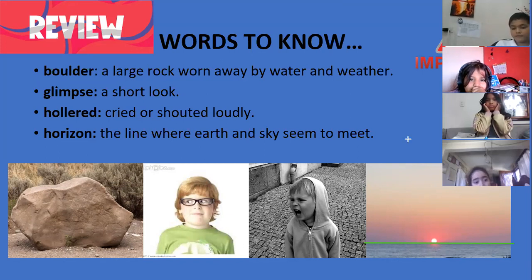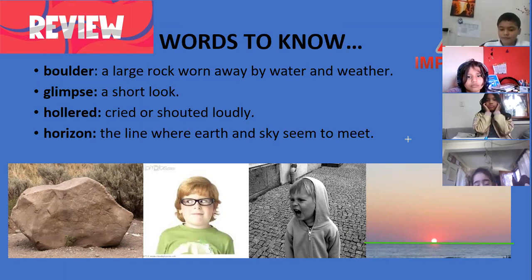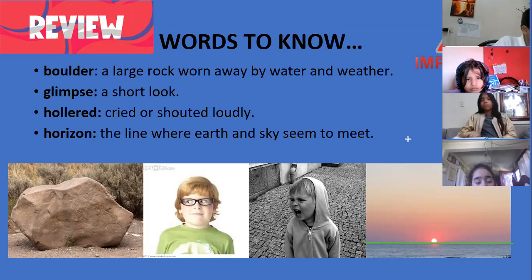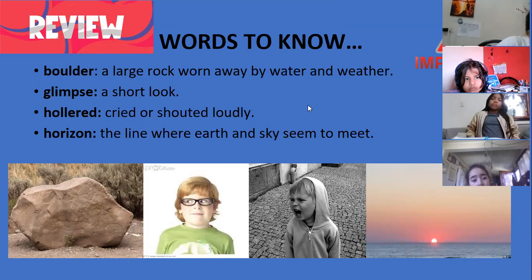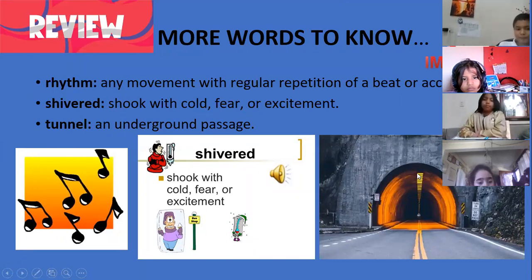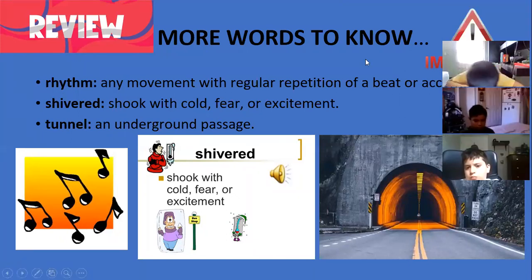A horizon is that line — it's something we see that actually doesn't exist in a physical sense. It's not something we can touch. It is the line where earth and sky seem to meet. Read them — remember this word, that's a great pronunciation.